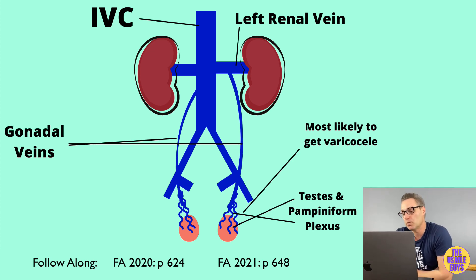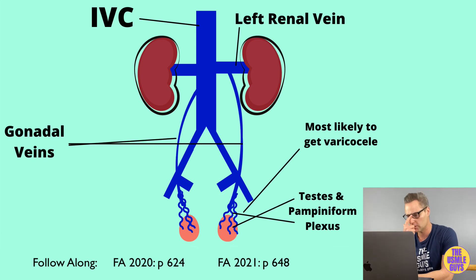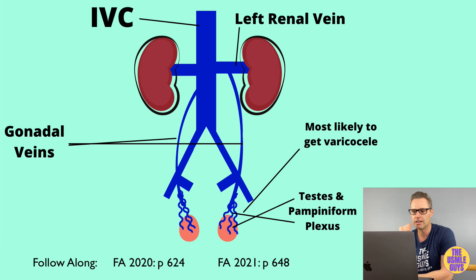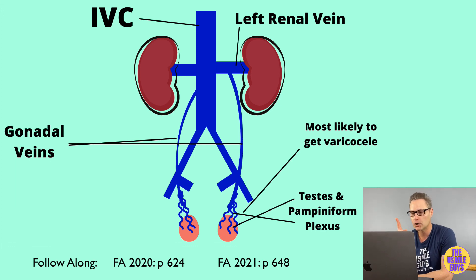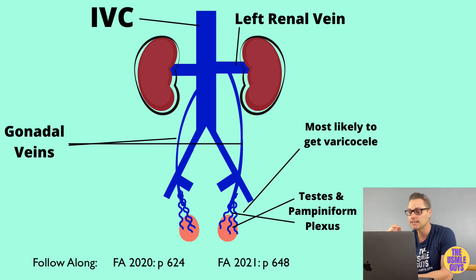Let's look at lymphatic drainage in the reproductive structures. The ovaries, testes, and fundus of the uterus drain through para-aortic lymph nodes. The body of the uterus, cervix, and superior part of the bladder drain through the external iliac nodes. The prostate, cervix, corpus cavernosum, and proximal vagina drain through the internal iliac nodes. The distal vagina, vulva, scrotum, and distal anus drain through the superficial inguinal nodes. The glans penis and glans clitoris drain through the deep inguinal nodes.